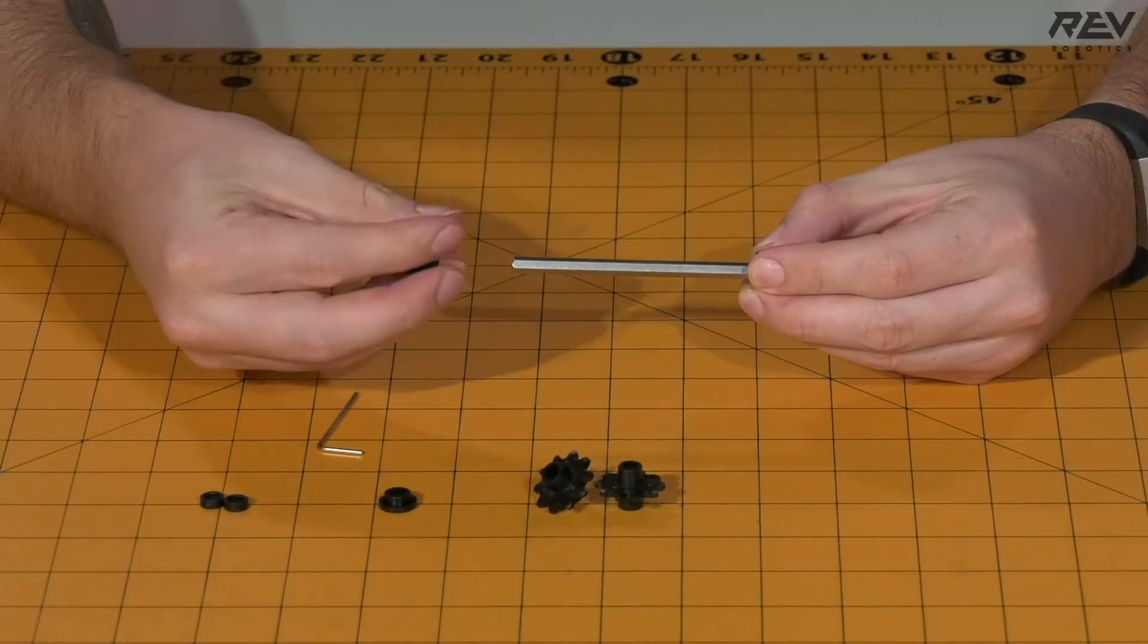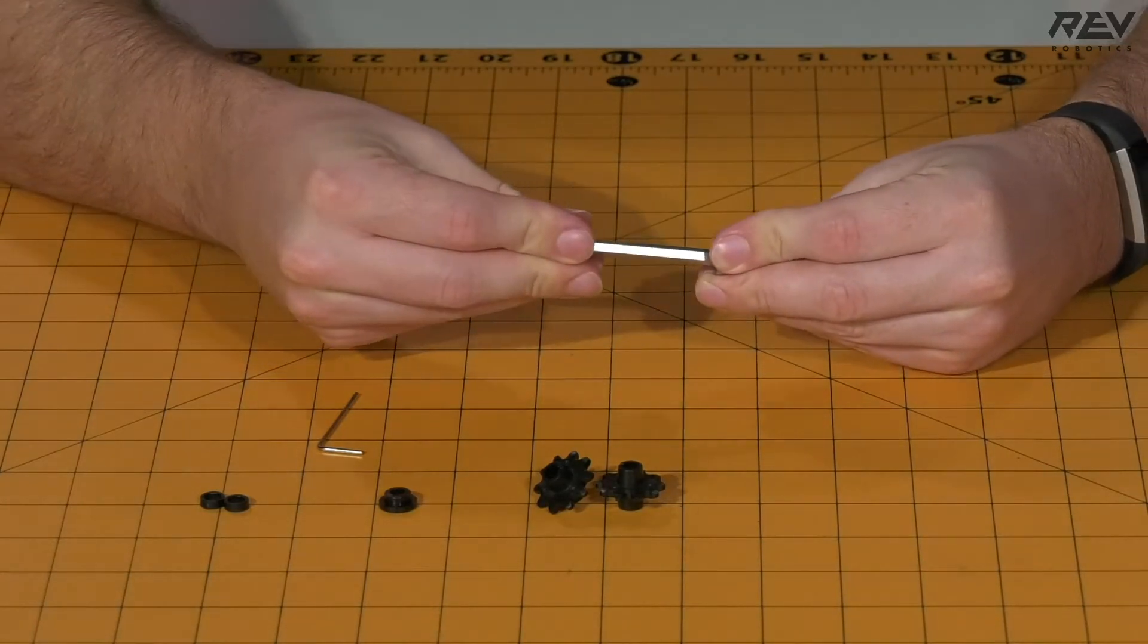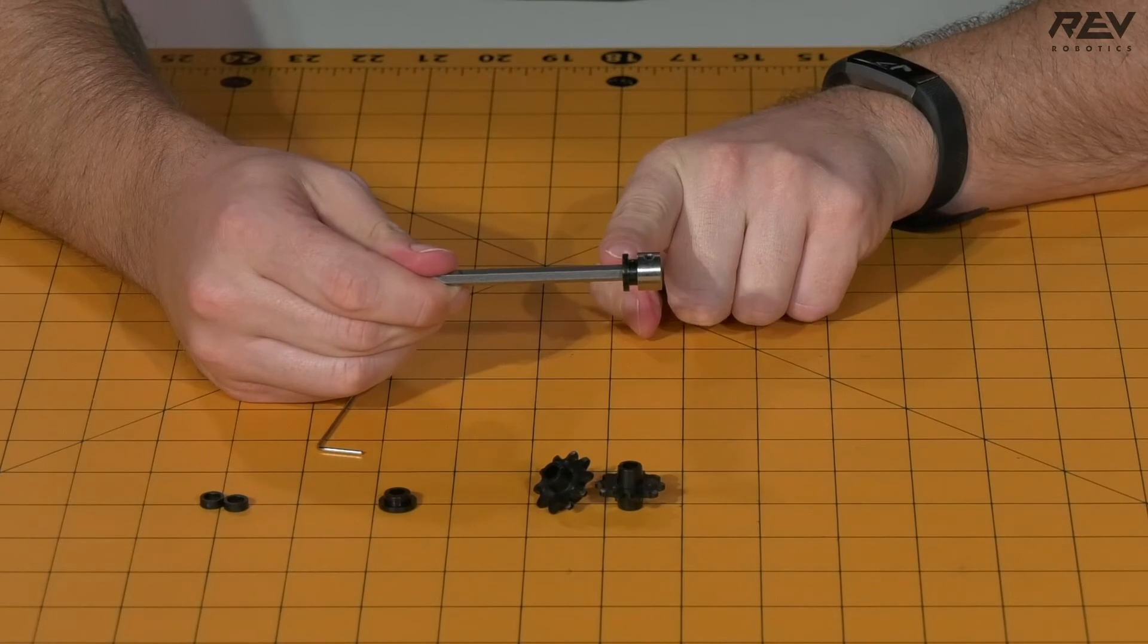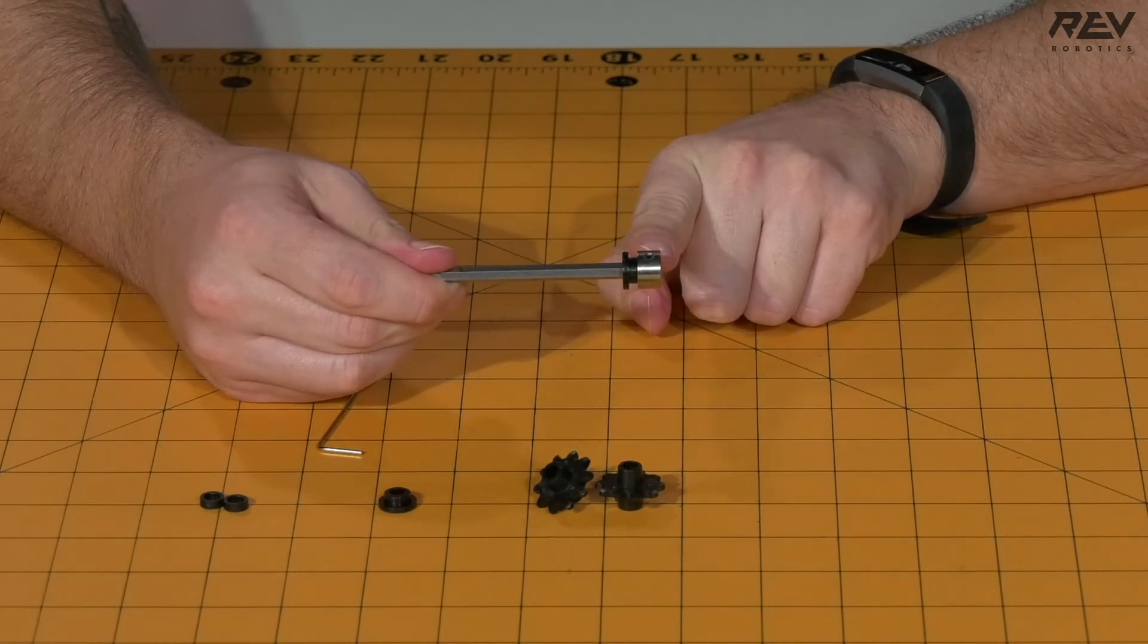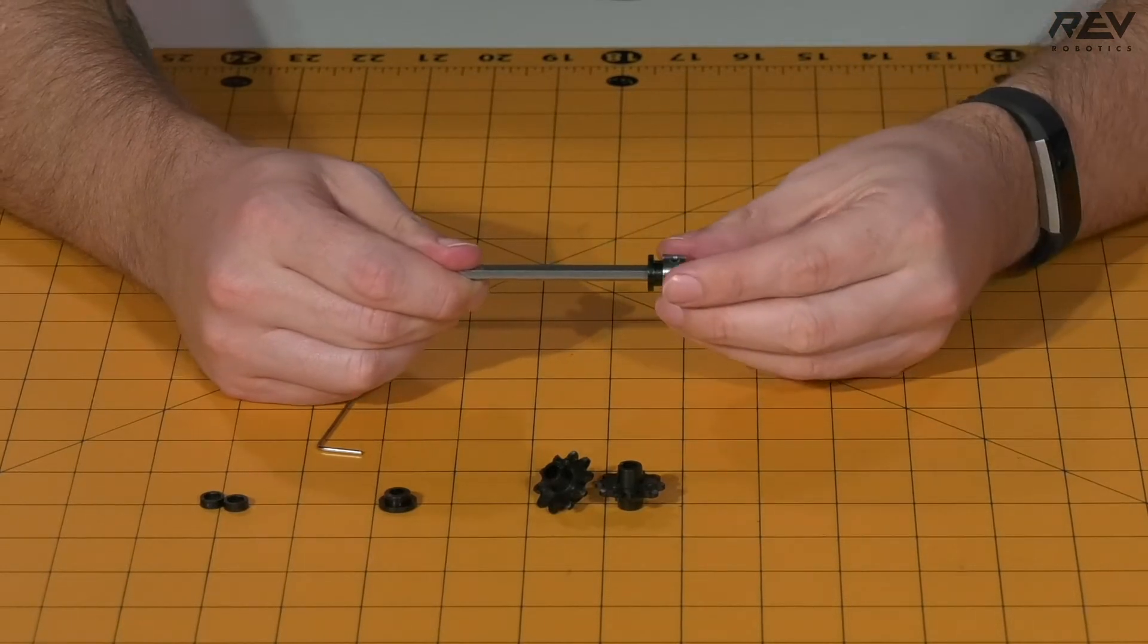Next, take a short through-bore bearing and slide it onto the hex shaft. It's important to note the location of the flange relative to the shaft collar, as this will be important during the final assembly of the channel drivetrain.